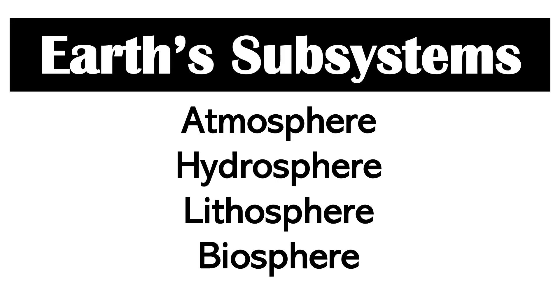Let's go with the different systems of our planet. Our planet has four systems: namely, the atmosphere, hydrosphere, lithosphere, and biosphere.